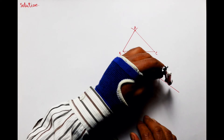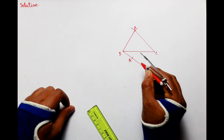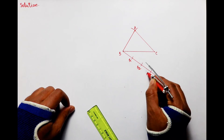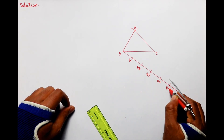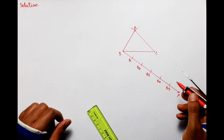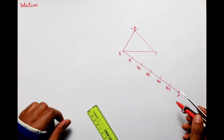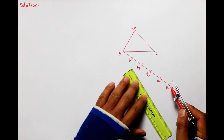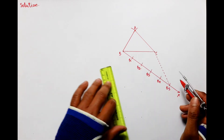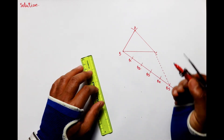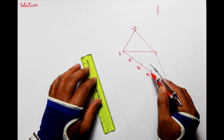तो हम BX पर points B1, B2, B3, B4, B5 mark करेंगे — कुल हमने 5 parts draw कर लिए। अब इसके बाद last वाले point B5 को C से मिला लीजिए।